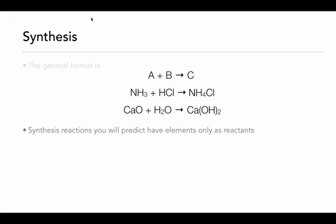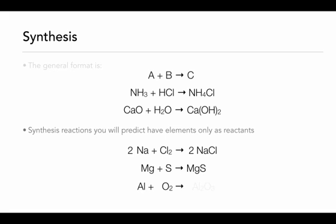The reactions that you're going to need to be able to predict are going to basically involve just elements. So sodium and chlorine — when they react, the only thing they can do is come together to form a compound, in this case sodium chloride, and we would balance that reaction to make sure each atom has the same number on both sides. Another example would be magnesium and sulfur combining to form magnesium sulfide. Our last example would be aluminum and oxygen reacting to form aluminum oxide. In this case the subscripts are different because the charges of aluminum and oxygen have to be balanced for the formula to be correct, and then we balance the reaction.